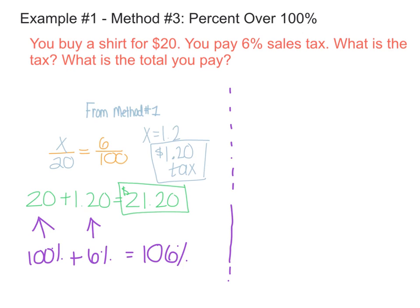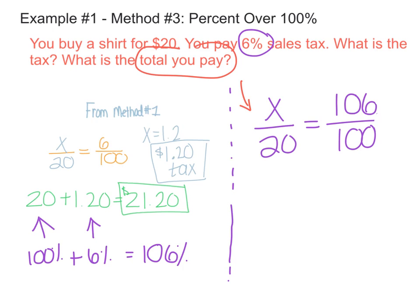So over here, the other way we could have set this up as a percent over 100 is I say, well, if I have a 6% sales tax, I'm paying the 100% of the original amount plus 6% extra. So when I set up my proportion, it's still the percent over 100 and the part over the whole. But my percent that I'm going to use this time is 106%. Because I'm going to be paying 106% of the total amount.